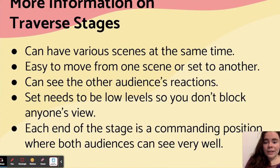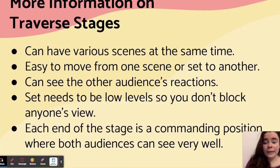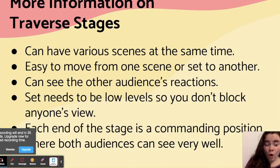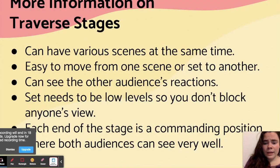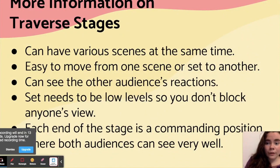More information on traverse stages: you can have various scenes going on at one time, and it's easy to move from one scene to another if they're all in different parts along the runway. You can see the other audience's reactions, but your set needs to be at a low level so you don't block anyone's view — so you need small set pieces like tables and chairs, nothing too big. The best place to stand is at the end of the stage because that's where everybody can see perfectly.